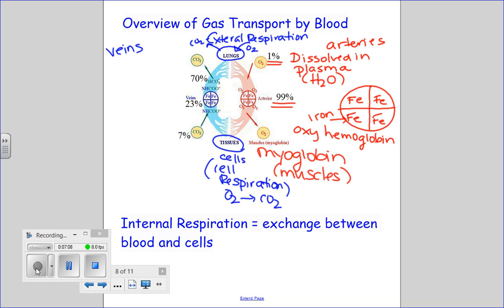On the left side then, now we're in our veins, 7% of CO2 is dissolved in plasma. So it's a little bit more than oxygen.